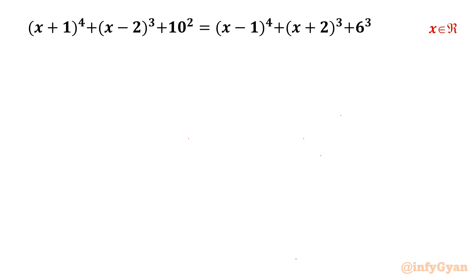Welcome back to Infigyan, my dear friends. Today in this video we are having one very interesting cubic equation challenge. It is (x+1)⁴ + (x-2)³ + 10² equal to (x-1)⁴ + (x+2)³ + 6³. And we have to find out real solutions only.